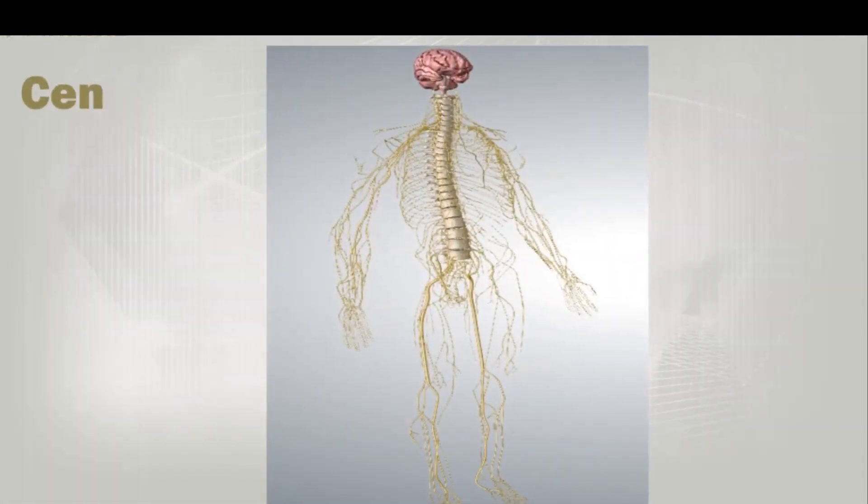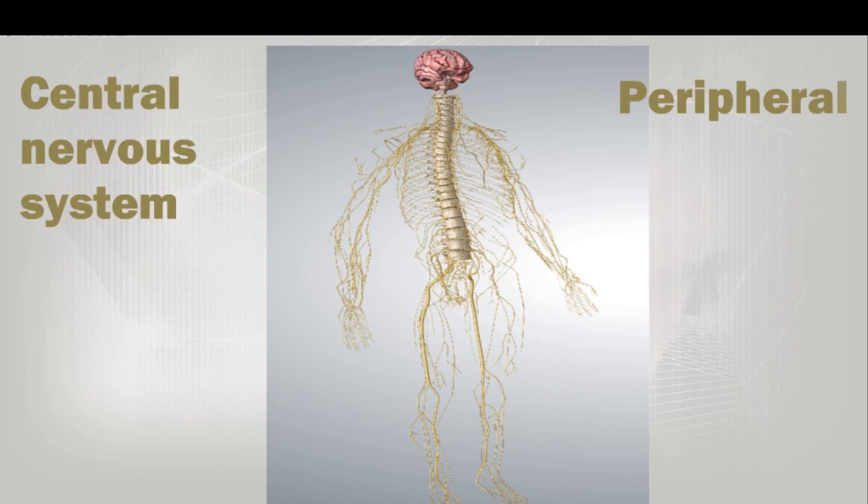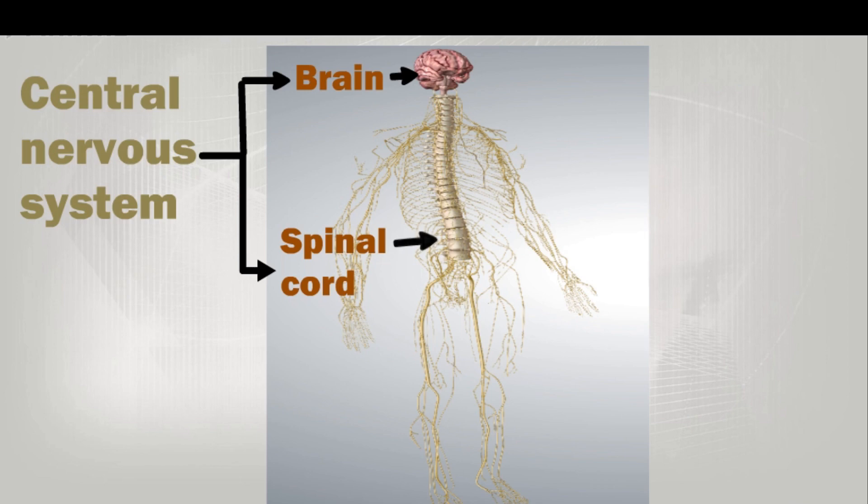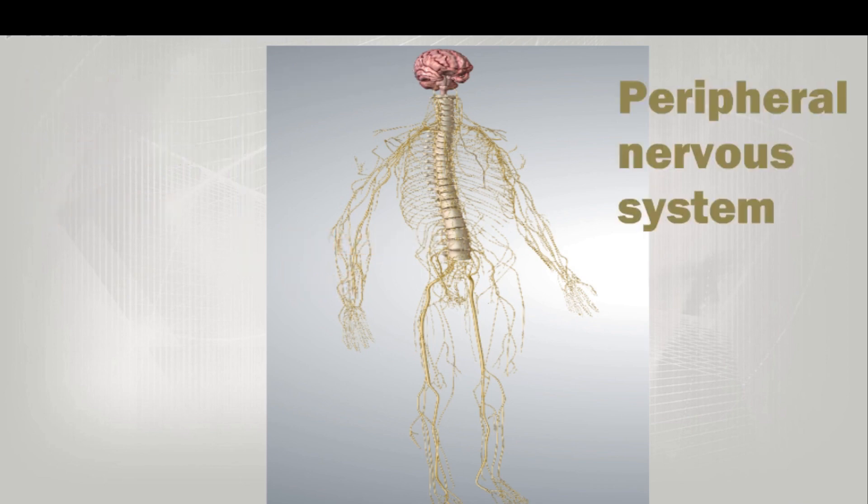The human nervous system consists of the central nervous system and peripheral nervous system. The central nervous system is composed of the brain and spinal cord. The peripheral nervous system consists of a network of nerves which connect the central nervous system to all parts of the body.